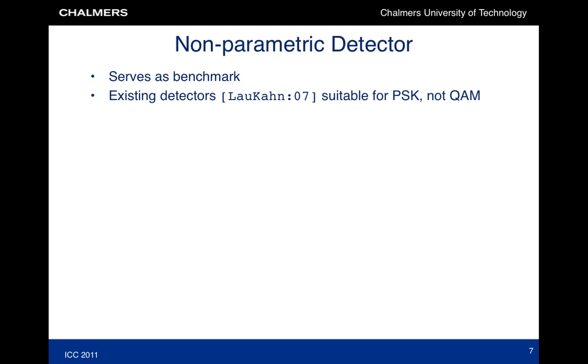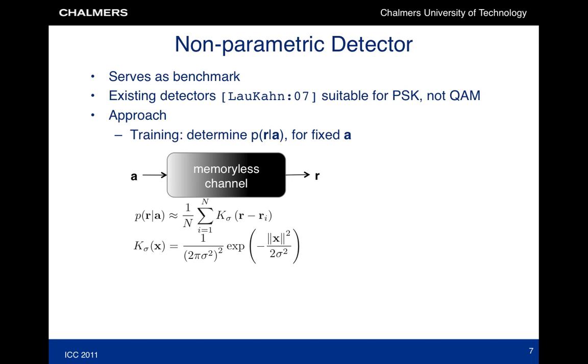As a benchmark, we have also included a nonparametric detector, which operates roughly as follows. For every possible transmitted symbol, we generate many observations, say a couple of thousands. Based on those observations, we can determine the distribution of the observation conditioned on that particular transmitted symbol. This involves the use of a kernel to smooth that distribution. We do this for every possible transmitted symbol. Then when we get a new observation, we can evaluate its probability conditioned on every possible transmitted symbol and choose the most likely one.